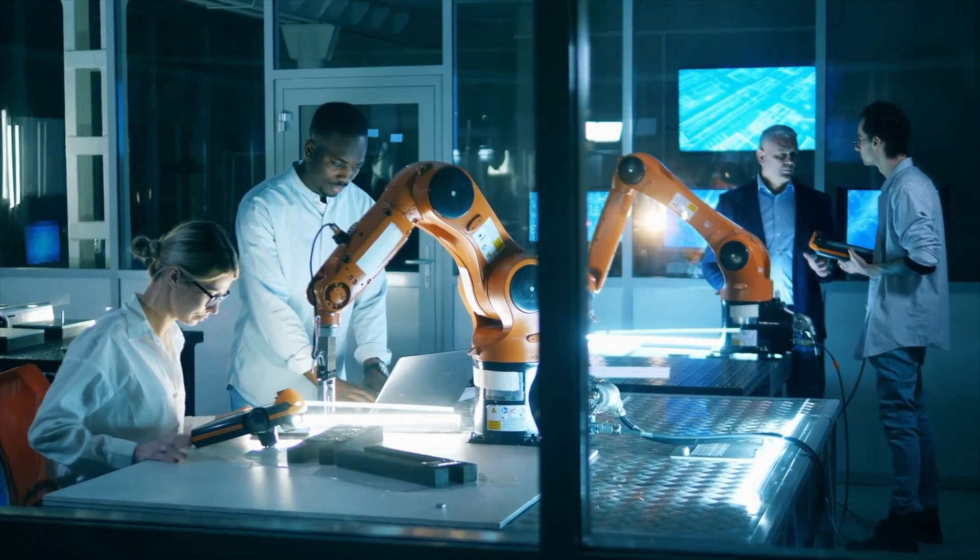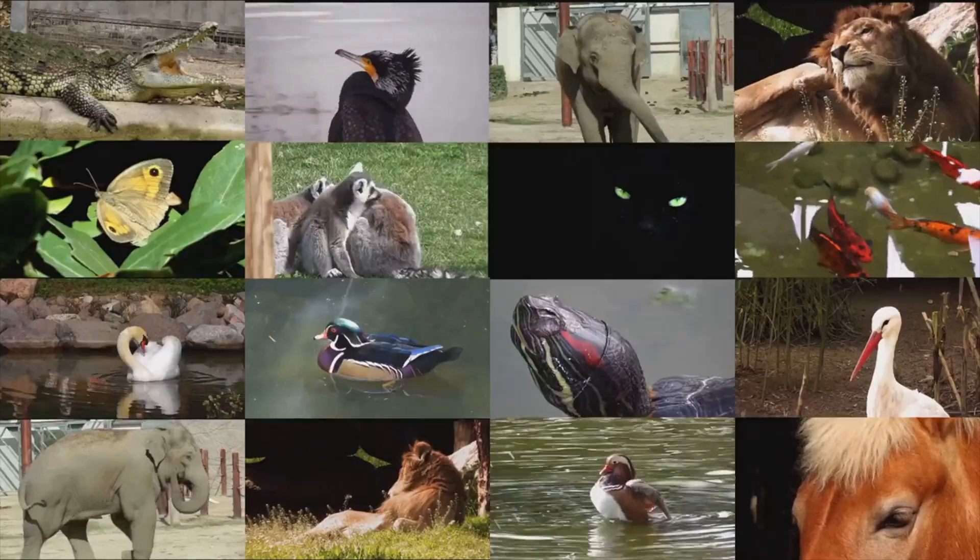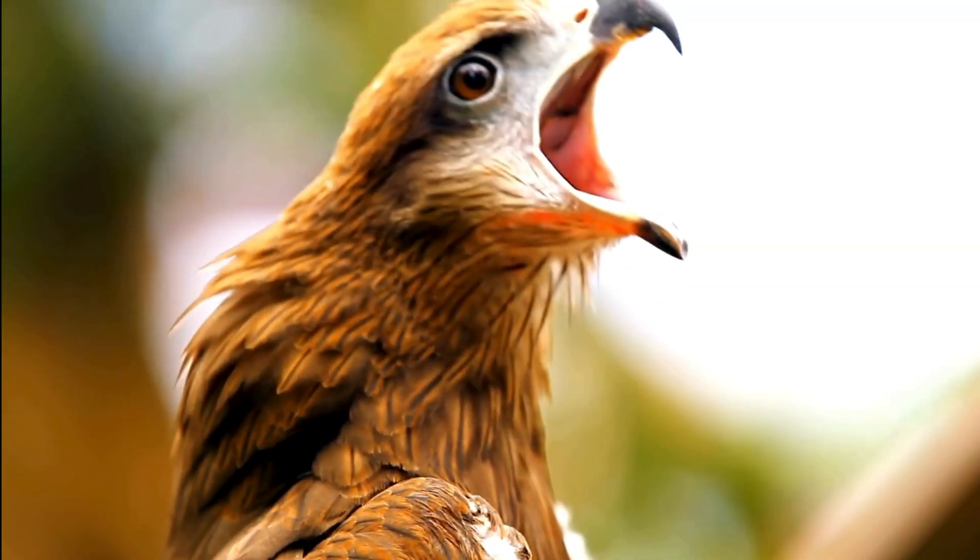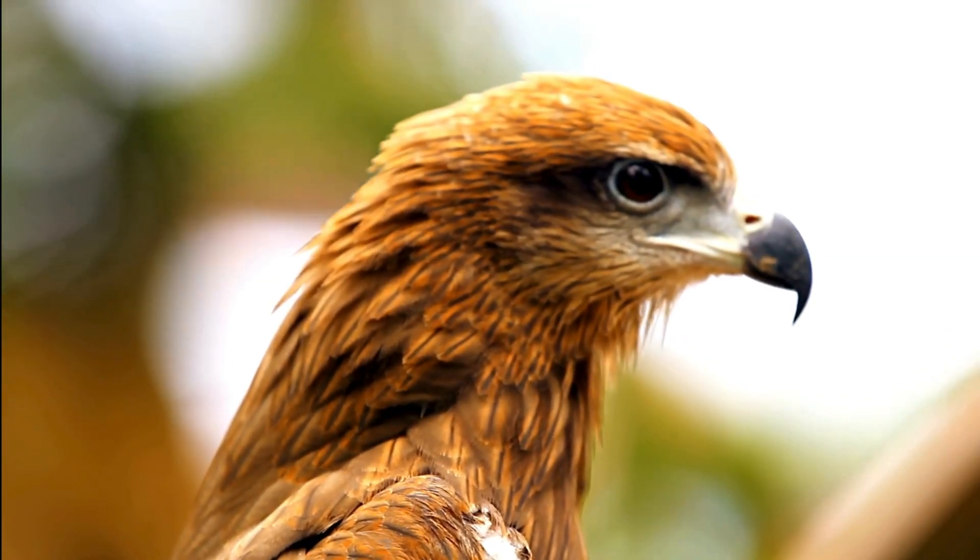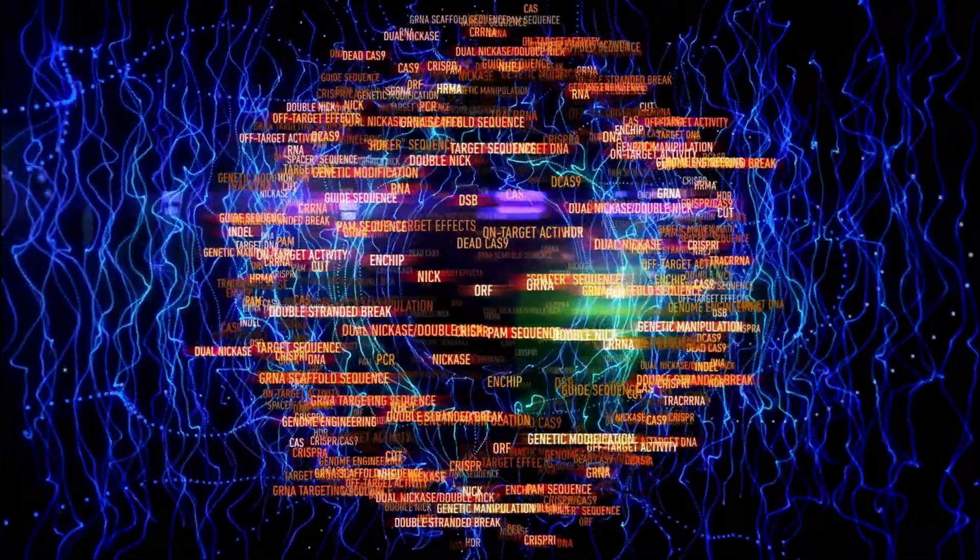But AI isn't stopping at plants. What about animals? Could we see animals with traits from multiple species? Could AI create a hybrid species, say part cheetah or part hawk? Sounds crazy, right? Well, here's the twist: we're already closer to this reality than you might think.